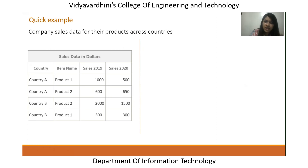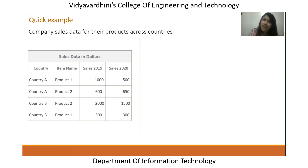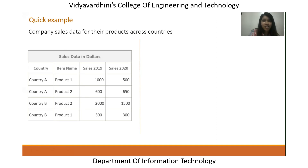By looking at the data, we see that product one is not doing well in country A in 2020. It took around 30 to 40 seconds to understand this. If we keep going row by row to understand how a product is performing across countries, it will take many hours given the actual amount of data we typically have.